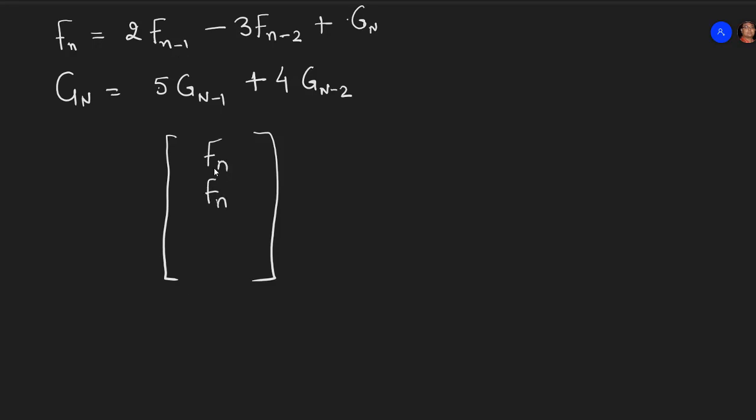Second term as n minus 1. But in case of G, if we pay attention the right side term has Gn. So that means we will be going with G of n plus 1 here and G of n here. And you will understand why I am taking n plus 1.